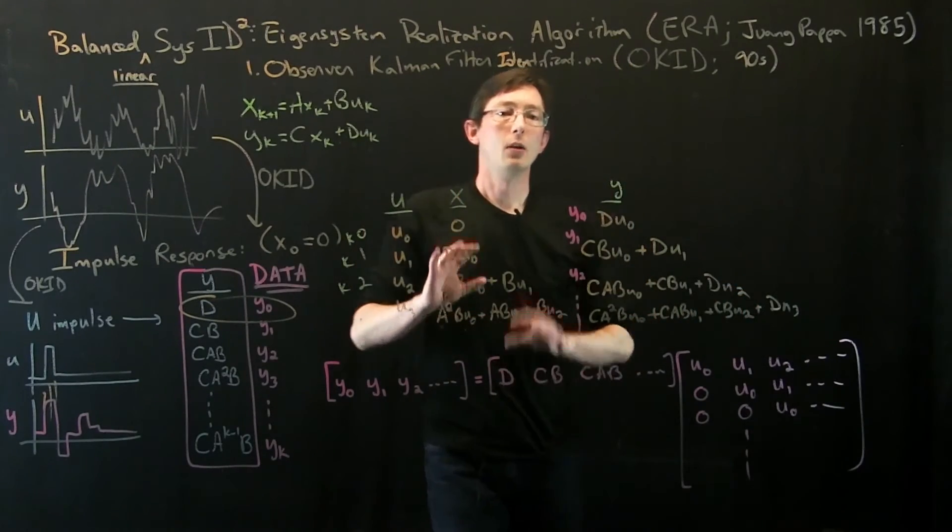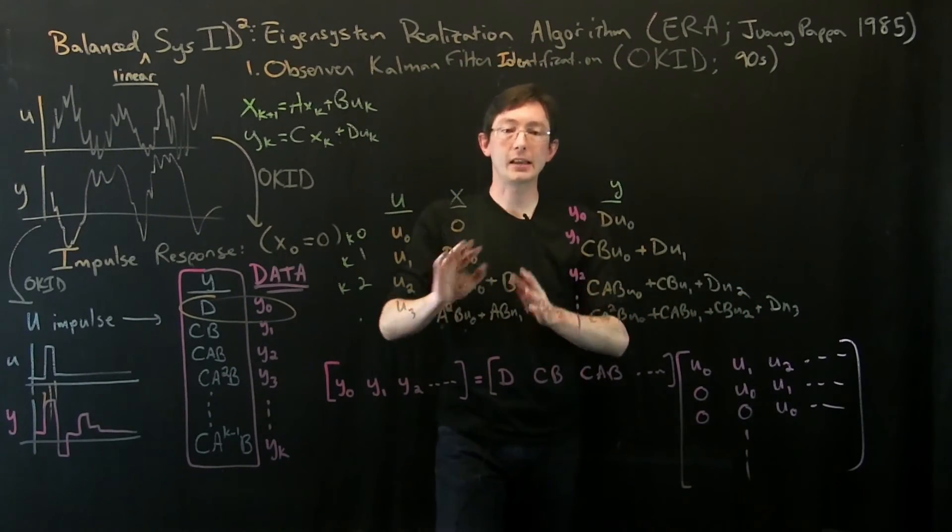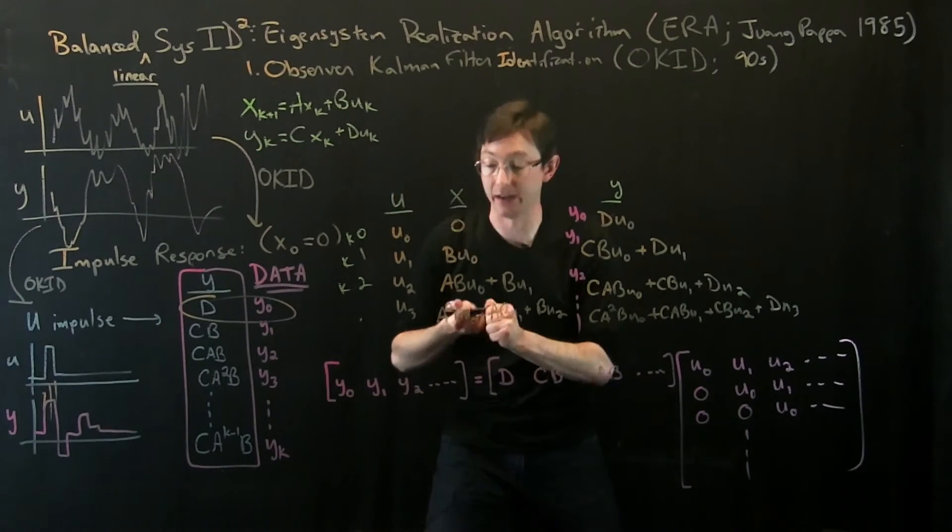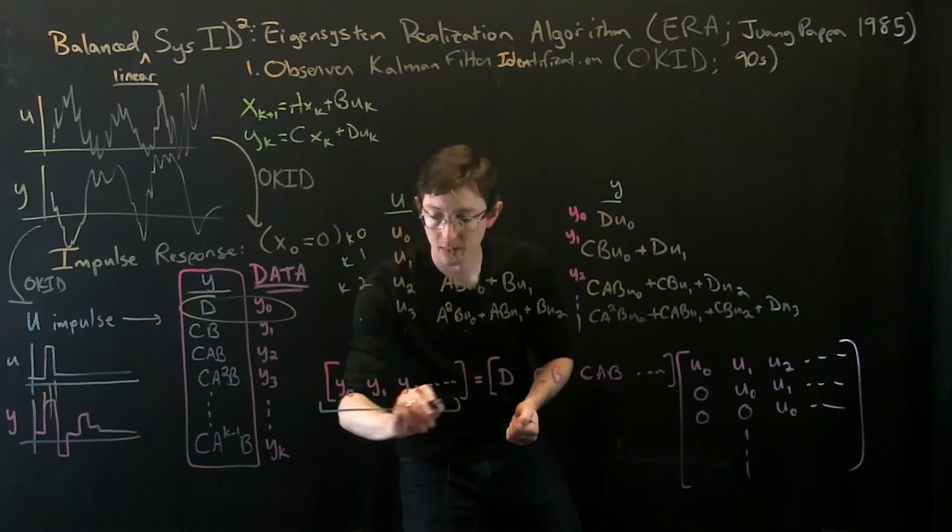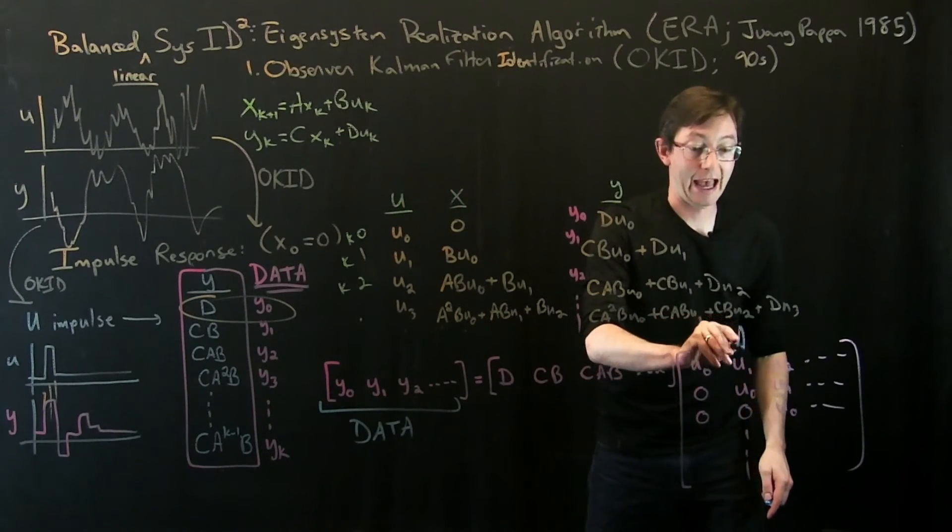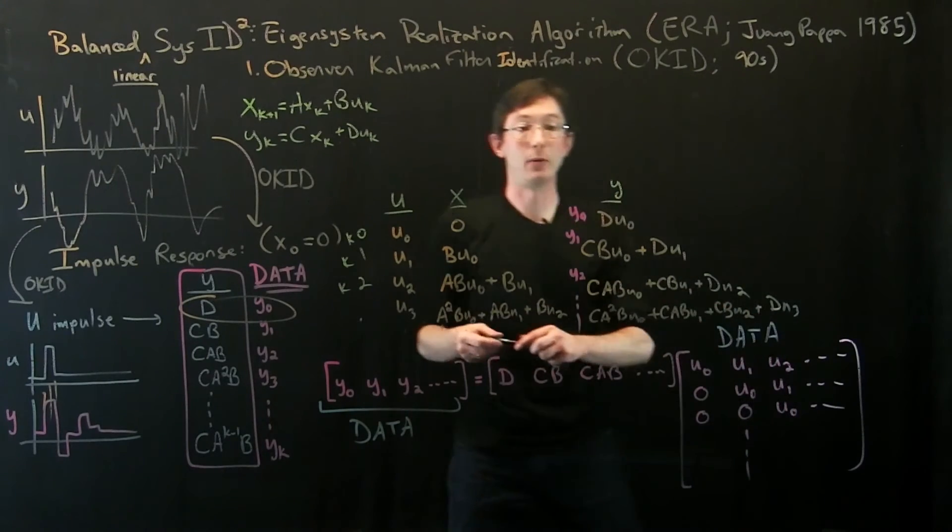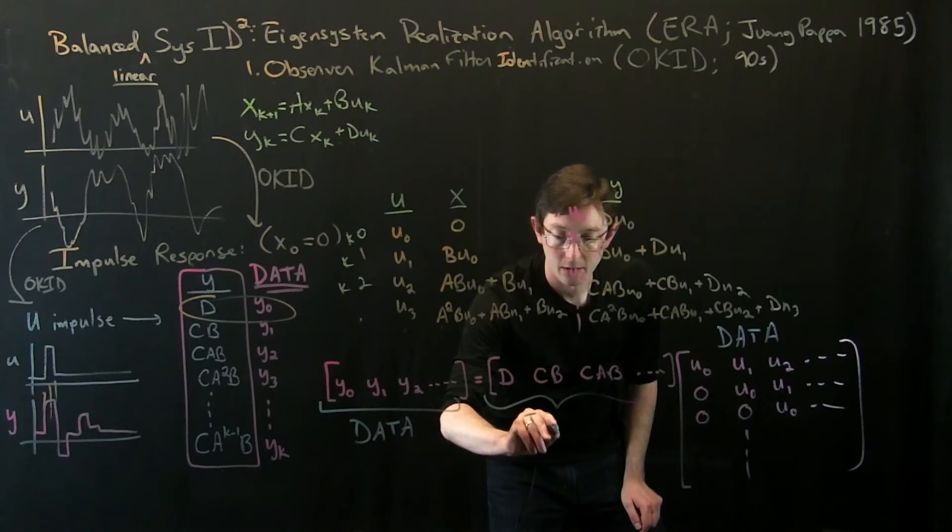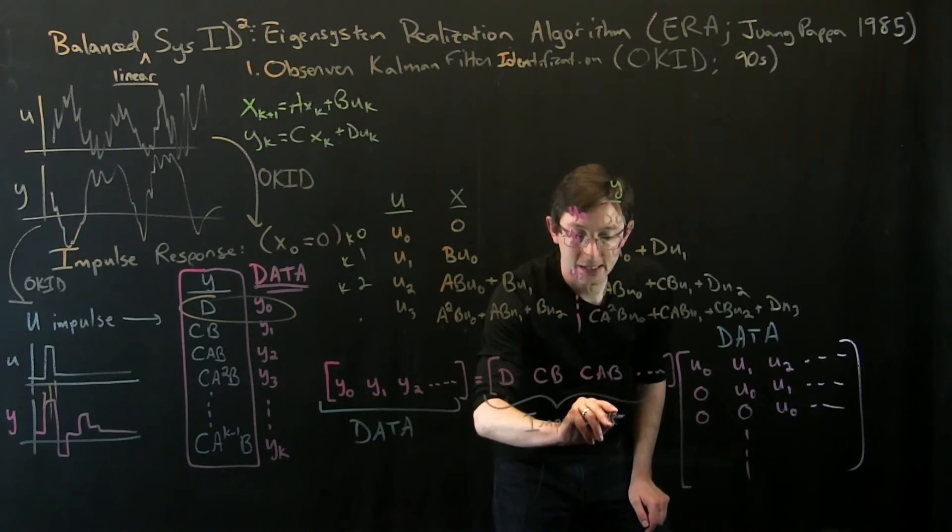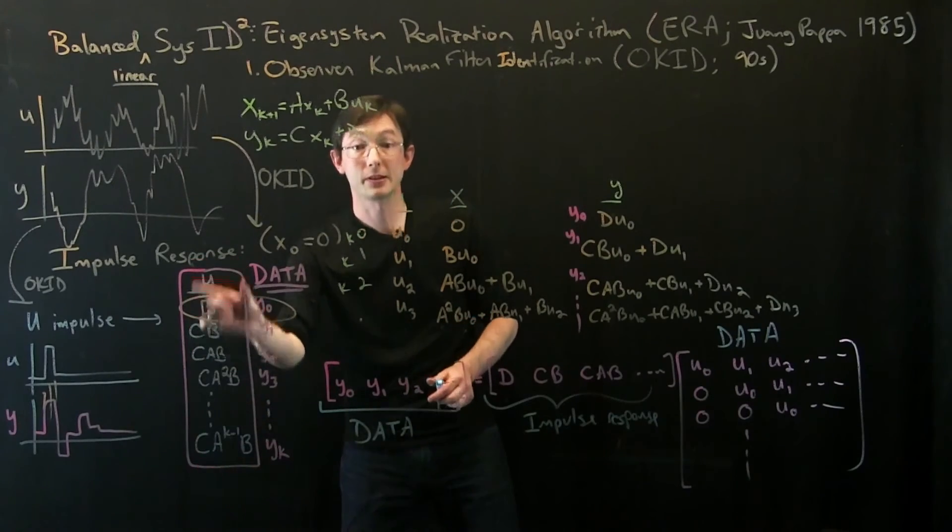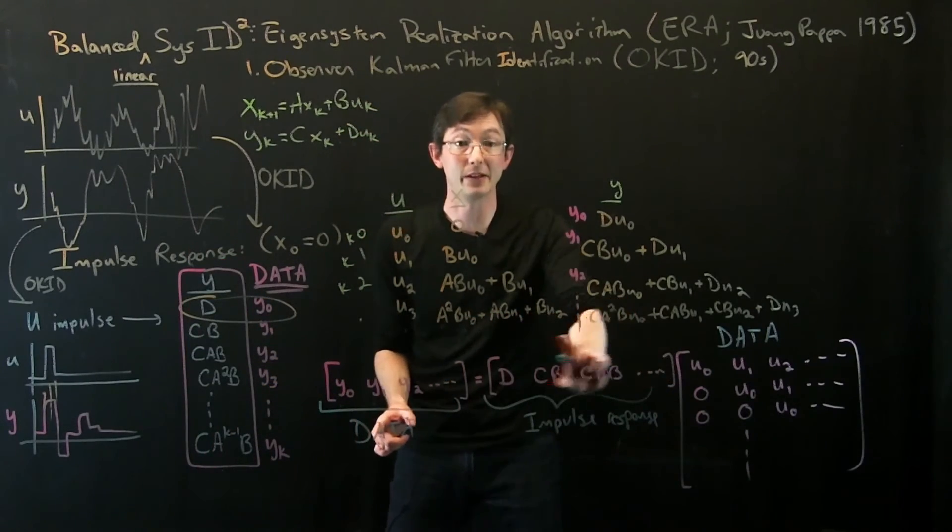So you get the idea here. What I've done is I've said my measured y, so this is data, this is data. I have, I know what my u is and I know what my y is. This is my impulse response. This is the thing I want. All of this impulse response matrices, that's this matrix here, that's what I want.